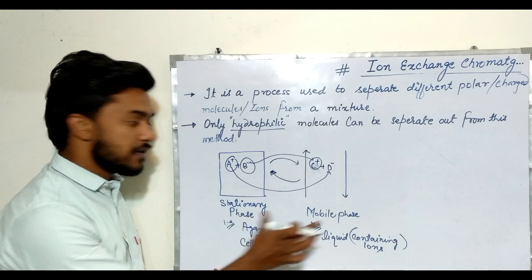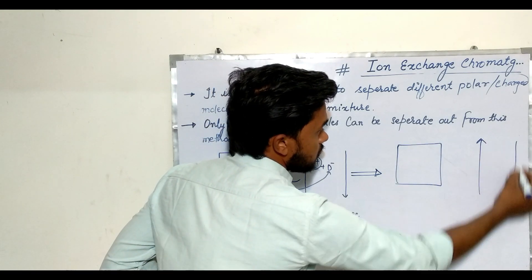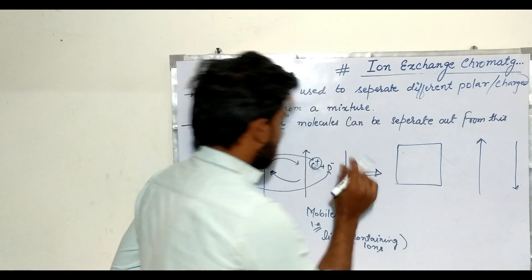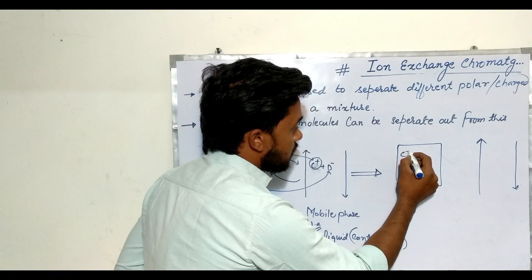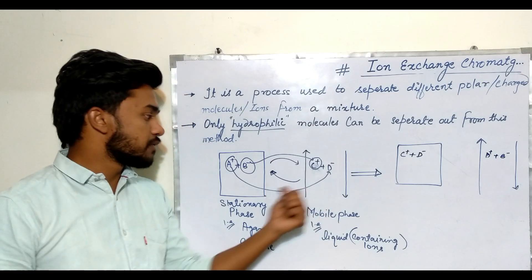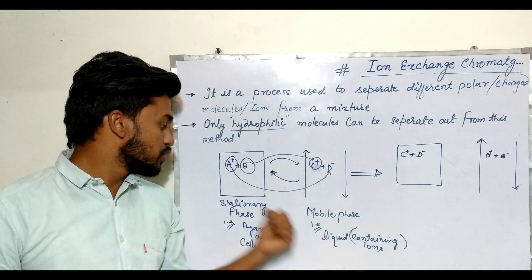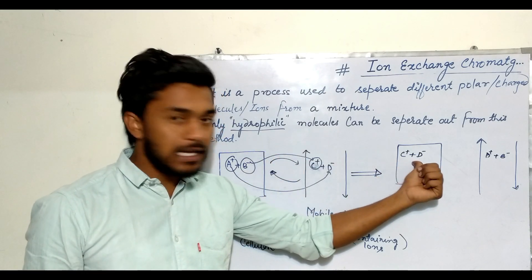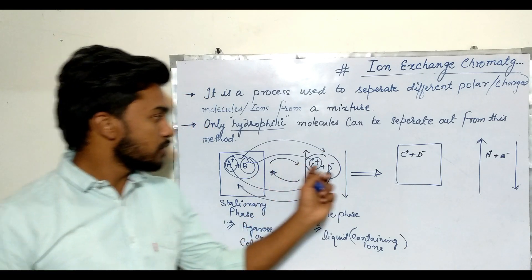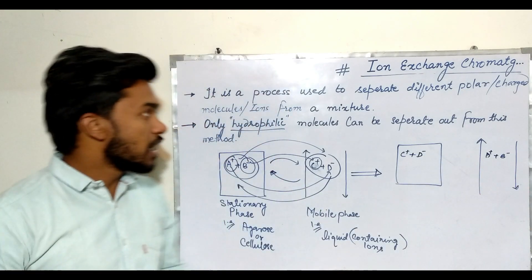After this attraction and interaction between the stationary phase and mobile phase, the charges are completely exchanged. C positive and D negative move to the stationary phase, and A positive and B negative move to the mobile phase. This is how ion exchange chromatography works.